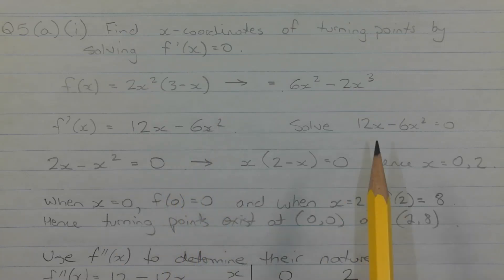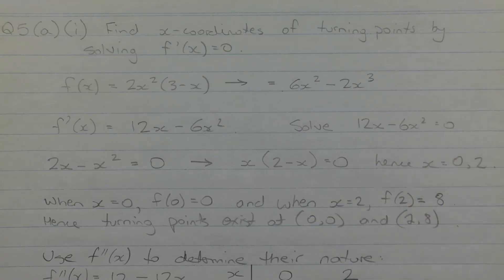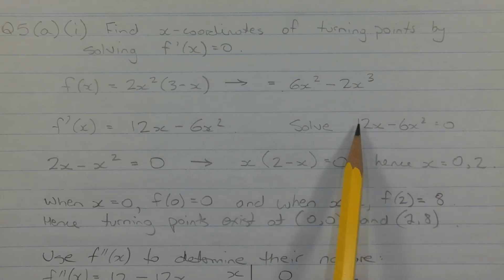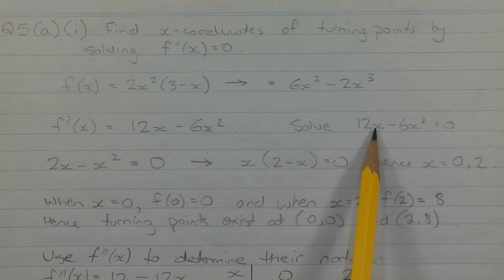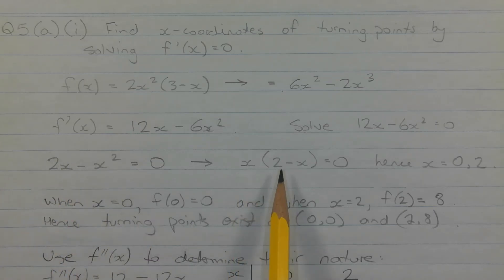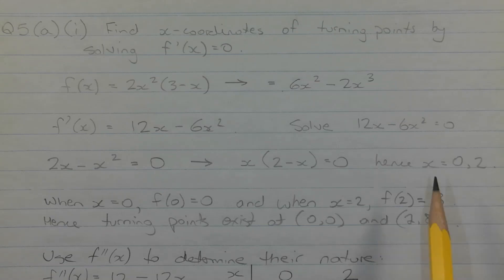Now we can solve the equation f'(x) = 0: 12x − 6x² = 0. Dividing all terms by 6, because we have multiples of 6 for the coefficients, the equation simplifies to 2x − x² = 0. Factorising out x gives x(2 − x) = 0, and by the null factor theorem we get x = 0 or x = 2 as solutions.